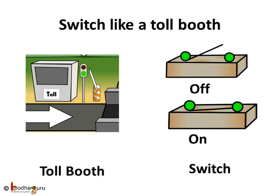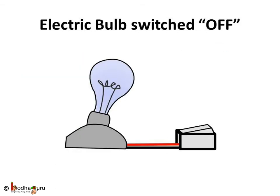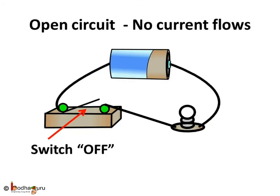The electric switch can stop or start the electric current flow. Switch is a very important part of the circuit as it can stop the current when it is not needed anymore. For example, what do we do when we don't need light in the room? We turn off the switch of the bulb when it is not required. This switch actually stops the flow of current to the bulb and the bulb does not glow.